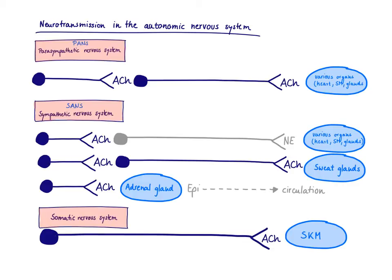There are exceptions. Although the sweat glands are innervated by the sympathetic nervous system — we sweat when running from a lion — the neurotransmitter released onto the sweat gland is acetylcholine. This is called sympathetic cholinergic innervation. The other exception is the adrenal gland, which is innervated by the sympathetic nervous system and releases epinephrine into the circulation.